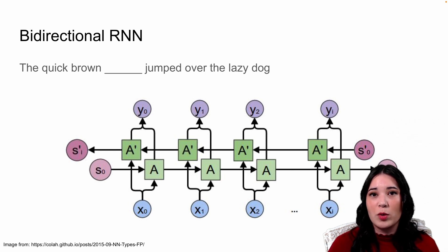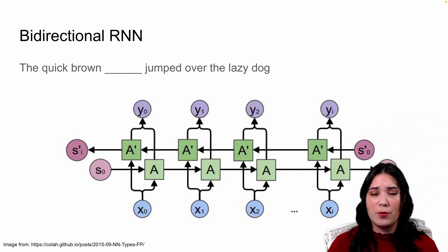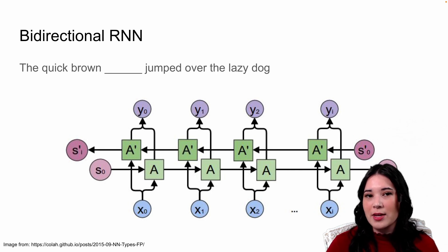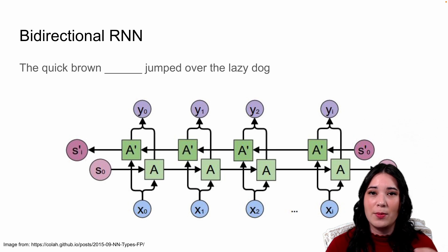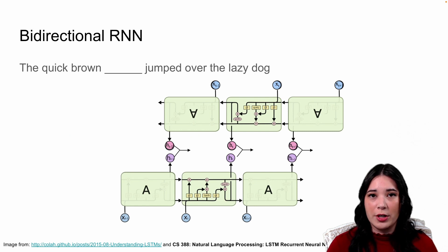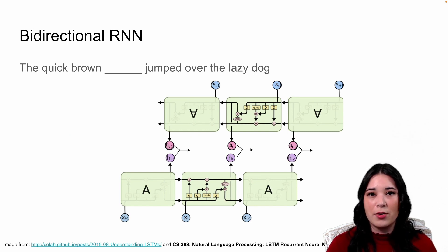In cases where we have data both before and after the blank we're trying to predict, this can be incredibly helpful to consider context from both directions. Here's another example of a bidirectional recurrent neural network using a slightly more complicated model that we'll cover in the next lecture.